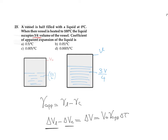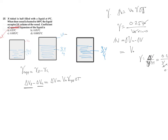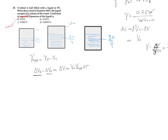We can reframe this as finding the coefficient of cubical expansion of the liquid, on the assumption that the container's volume is not changing. If the volume of the container is constant, we consider only how the liquid volume changes — from V₀/2 to 3V₀/4 — and find gamma of liquid, not the apparent expansion.